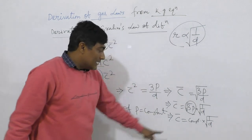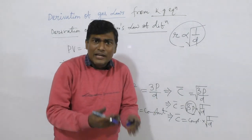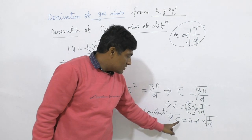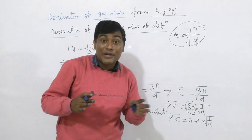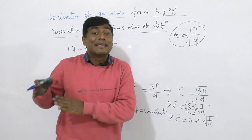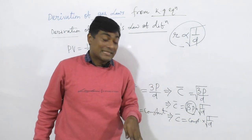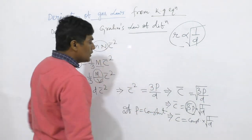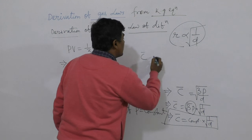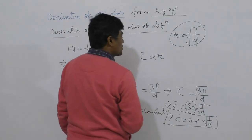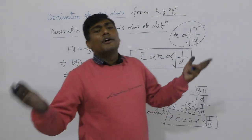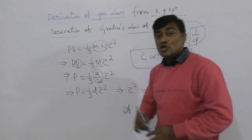The velocity of a gas is nothing but its rate of diffusion — how fast a gas moves from one point to another. Whether it is root mean square velocity, average velocity, or most probable velocity, it represents the velocity of the gas. So the rate of diffusion is inversely proportional to the square root of density. Thus Graham's law of diffusion is proved from the kinetic gas equation.